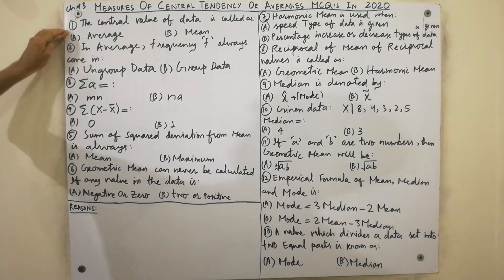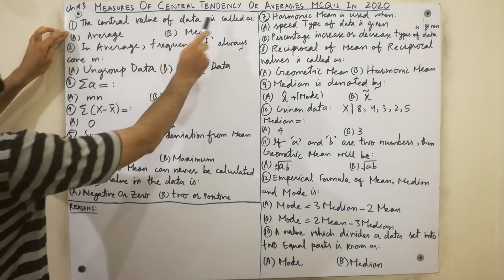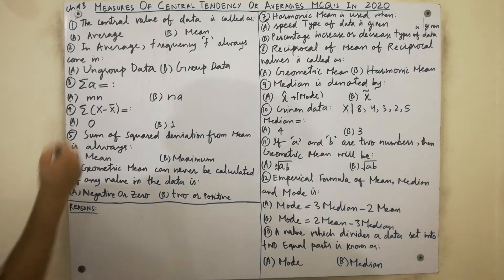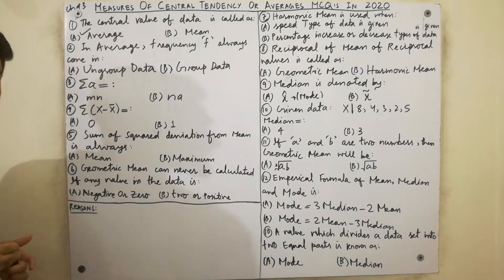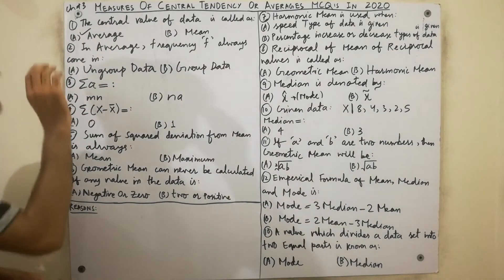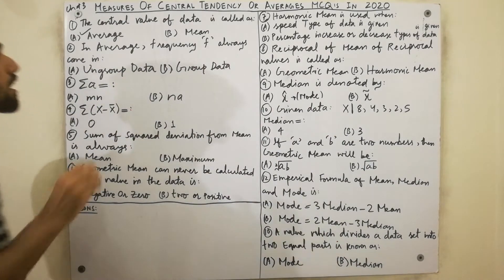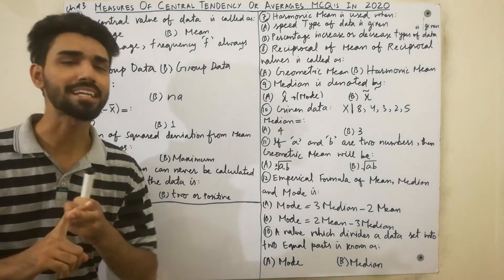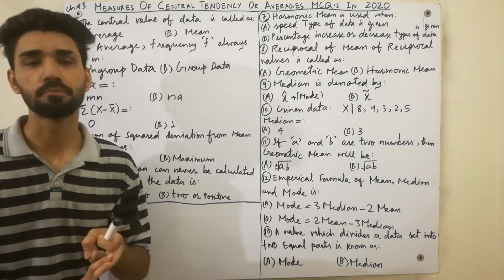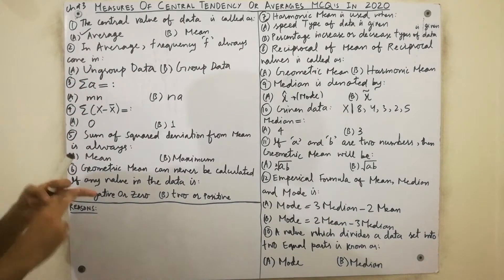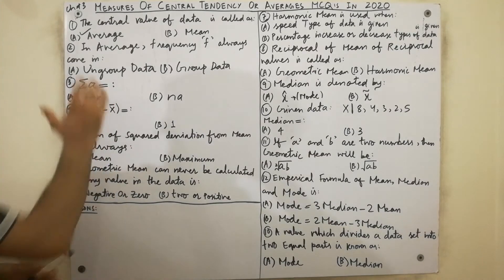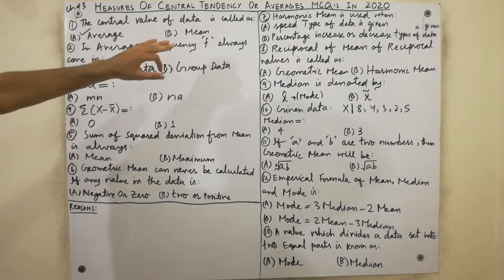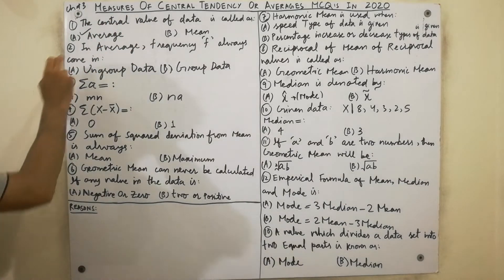Here is the first MCQ: the central value of data is known as what? Very simple — it is called an average. Must remember that the central value of data is called as average. Average has types: arithmetic mean, geometric mean, harmonic mean, median, and mode — those are the types of average. The definition: the central value of data is called as average.